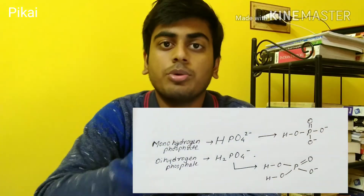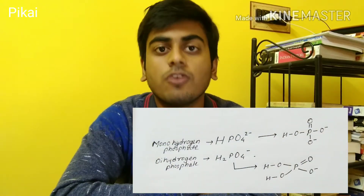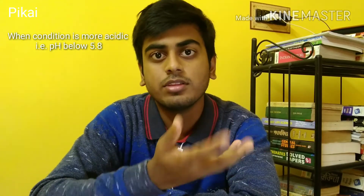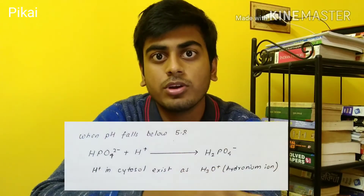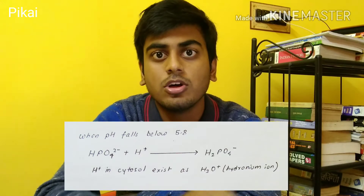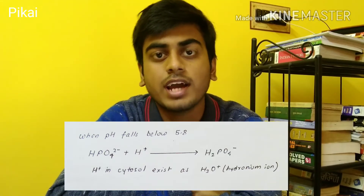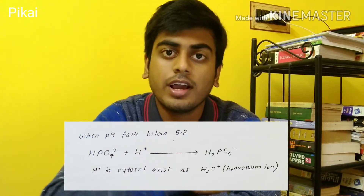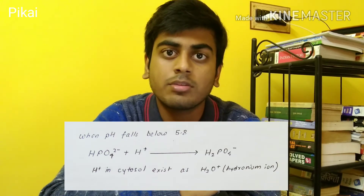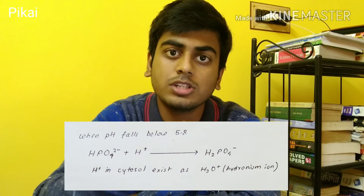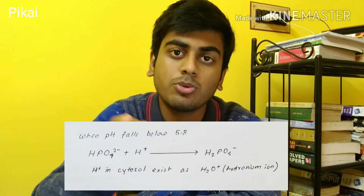So when the pH range falls below 5.8, the monohydrogen phosphate ion takes up the excess amount of H+ which is responsible for the falling pH below 5.8. It takes up that H+ and forms dihydrogen phosphate, thus taking up the excess H+ and putting the pH back to the normal value within the range of 5.8 to 8.0.